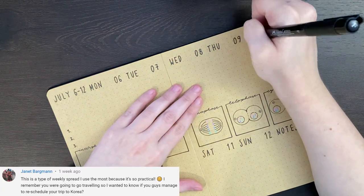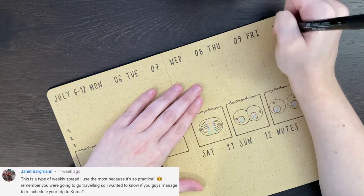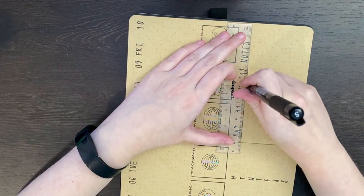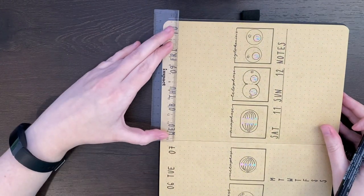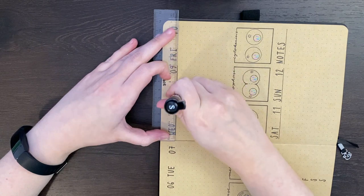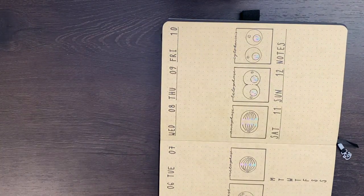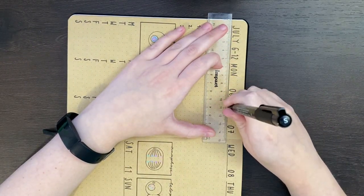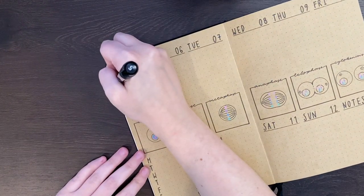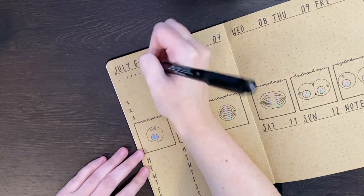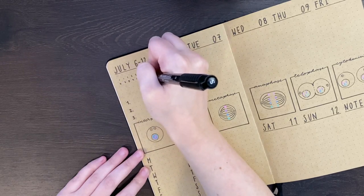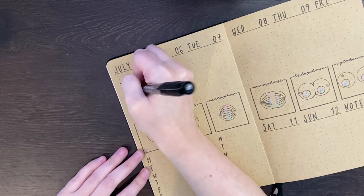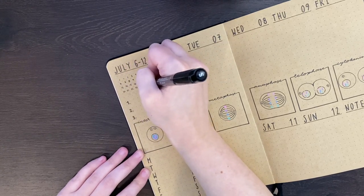Our next question comes from Janet, who asked, I remember you were going to go traveling, so I wanted to know if you guys managed to reschedule your trip to Korea. Sadly, we haven't been able to reschedule that one just yet, because things are still so uncertain with air travel and everything else that's going on in the world. We've kind of just benched that one for now, but Vogel and I are going to be taking a trip away soon. We're going to go up to the Waikato, just for about five days, but it should be a nice little getaway for us. We're still planning to go to Queenstown at some stage, but because flights are really expensive at the moment, because they're running less of them, we figured we'd also just bench that one for now and hopefully see about doing it next year. Maybe. If we can.